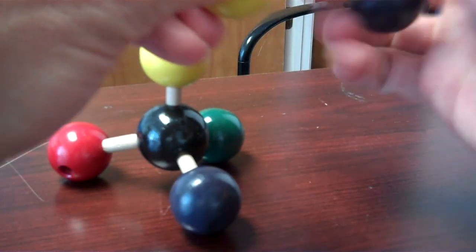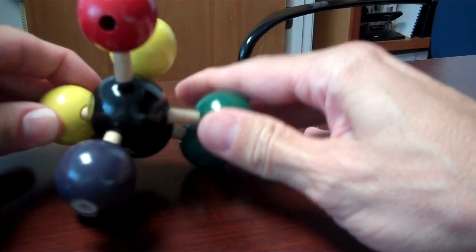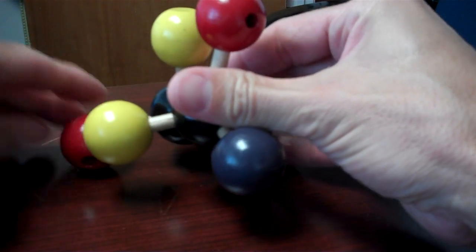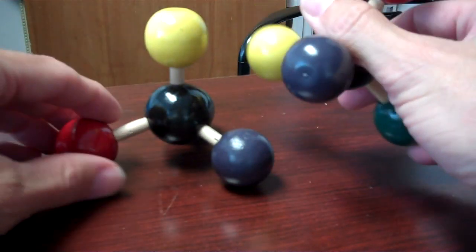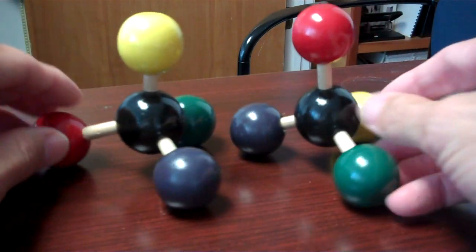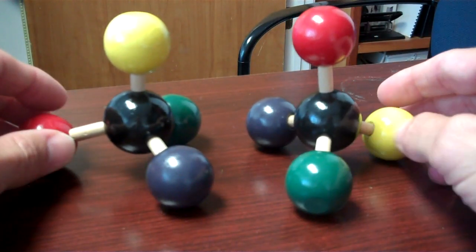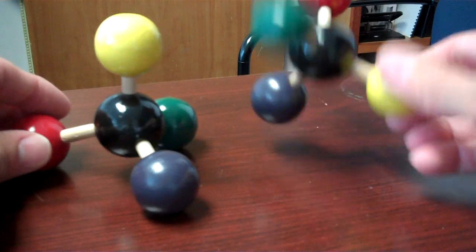Or if I orient this so that the green and purple atoms do coincide and superimpose, now notice that the red and the yellow are not matching up. So no matter how I spin these around I can't get them to perfectly superimpose. And that's what we mean to say that they are non-superimposable.